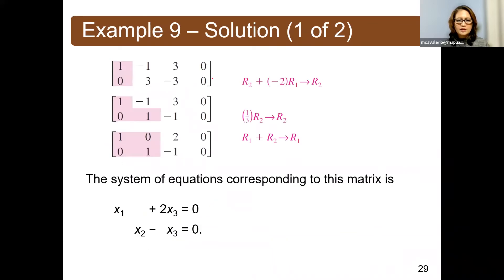Notice that we can still simplify the last row by multiplying both sides by 1 third. So we will have 0, 1, negative 1, and 0. And for rho 1, we will have 1, negative 1, 3, and 0.